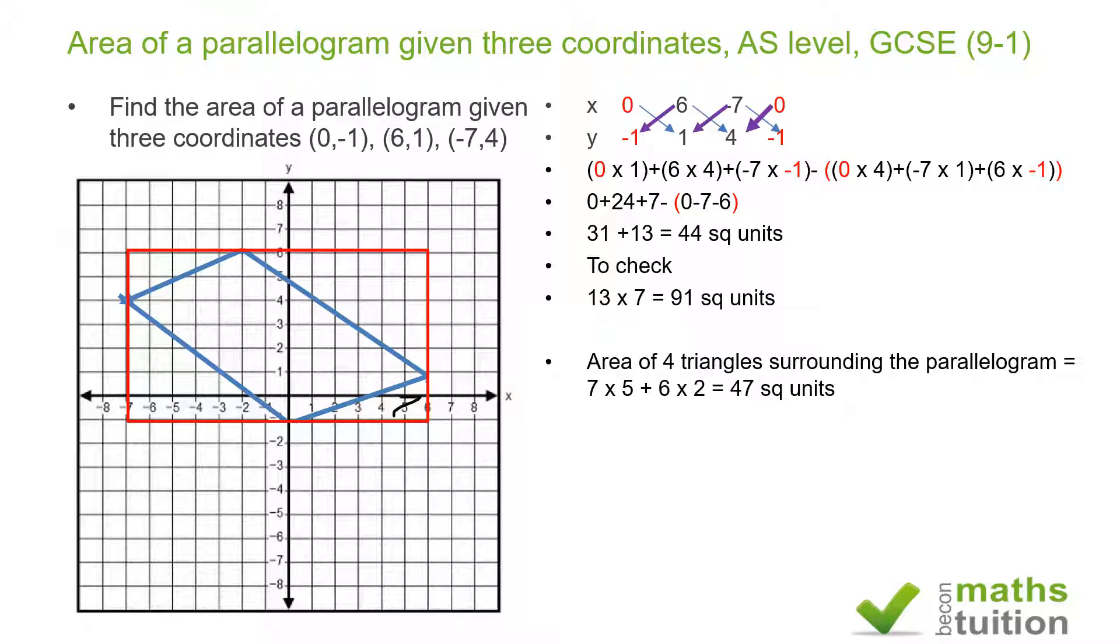Which is that one and that one, the area of those two triangles there. That gives me a value of 47 square units. Now if I subtract that from my 91 square units, I get 44 square units. So the area of the parallelogram using this method is just as good as the first one.